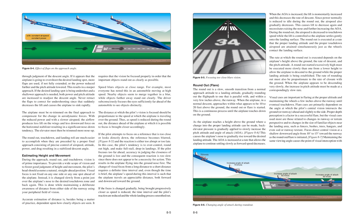Estimating height and movement during the approach, round-out, and touchdown — vision is of prime importance. To provide a wide scope of vision and to foster good judgment of height and movement, the pilot's head should assume a natural, straight-ahead position. Visual focus is not fixed on any one side or any one spot ahead of the airplane. Instead, it is changed slowly from a point just over the airplane's nose to the desired touchdown zone and back again, while maintaining a deliberate awareness of distance from either side of the runway using peripheral vision. Accurate estimation of distance is, besides being a matter of practice, dependent upon how clearly objects are seen.